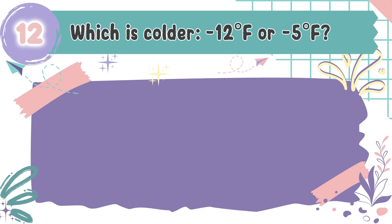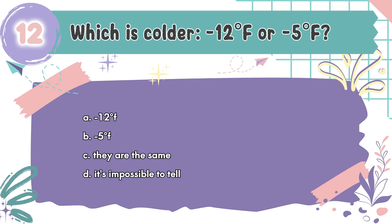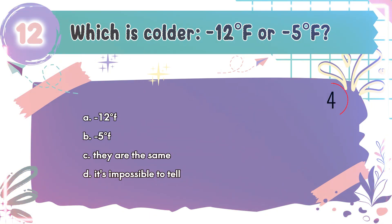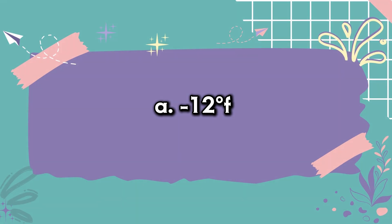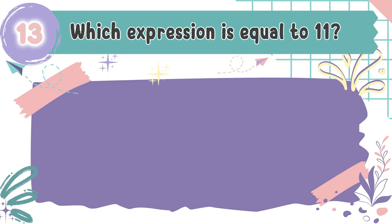Question number 12: Which is colder — negative 12 degrees Fahrenheit or negative 5 degrees Fahrenheit? The choices are A. Negative 12 degrees Fahrenheit, B. Negative 5 degrees Fahrenheit, C. They are the same, D. It is impossible to tell. The correct answer is A. Negative 12 degrees Fahrenheit. The more negative a temperature is, the colder it is.